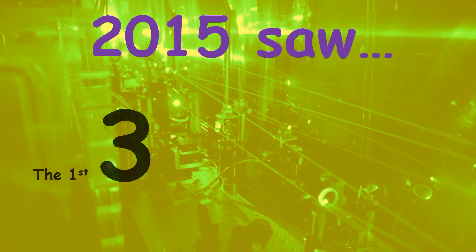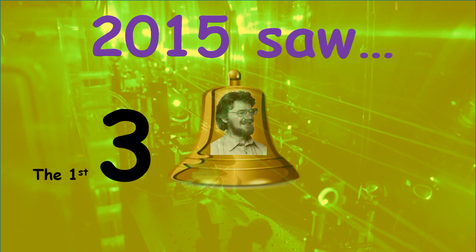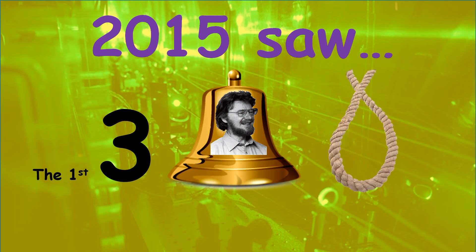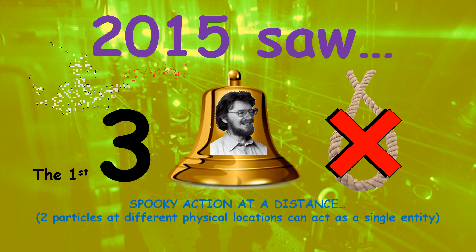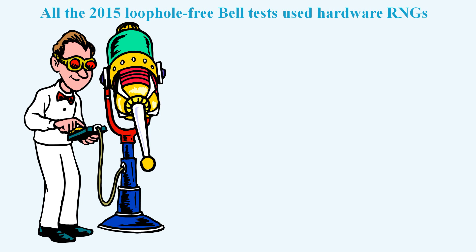2015 saw the first three Bell test experiments that claimed to contain no loopholes. Surely spooky action at a distance must really be happening. One approach that a sceptic could use to try to guess why these experiments are violating Bell inequalities would be to compare the loophole-free experiments and search for common factors.